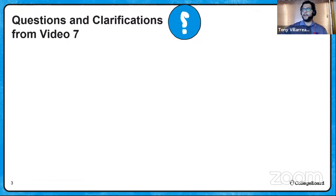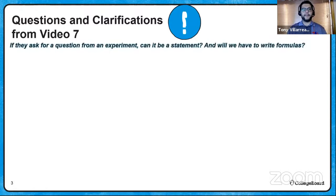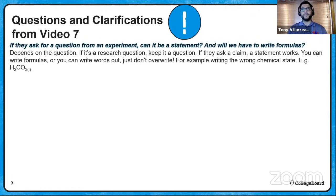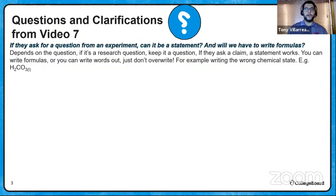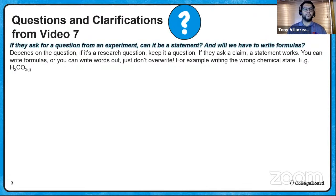Apologies if I'm a little sniffly today. For video questions and clarifications: if the test asks for a research question, keep it as a question; if it asks for a claim, a statement works. For formulas, you can write either the words or the formula — just don't overwrite. For example, carbonic acid H₂CO₃ should carry the subscript AQ instead of liquid; getting that wrong costs you points even if the equation is right.